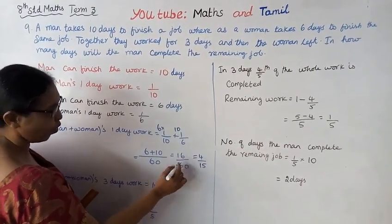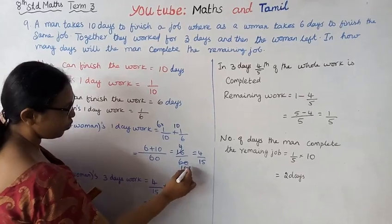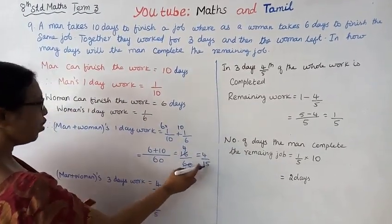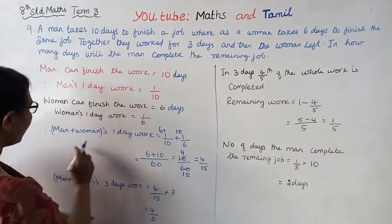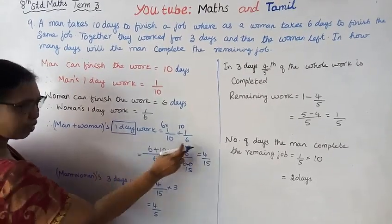We can simplify: 4 times 4 is 16, 4 times 15 is 60. So 16/60 equals 4/15. Man plus woman's one day work is 4/15.